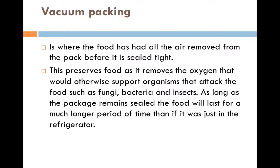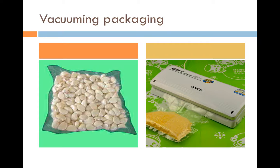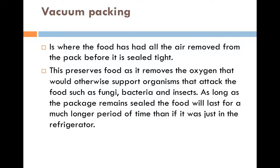Now, vacuum packaging. If you look at the image here, you've got garlic cloves and some soup, where a device sucks out the air and seals the plastic sleeve airtight. By removing the air and sealing it tight, you remove the oxygen that would otherwise support organisms that attack food — such as fungi, bacteria, and insects. So removing the oxygen reduces the spoilage. There's a recurring theme here: reduce the temperature, reduce water, reduce oxygen — since bacteria and microbes require heat, water, and oxygen to thrive. Remove them and you reduce or eliminate spoilage.